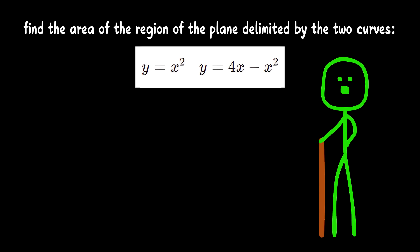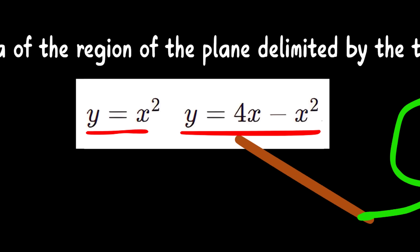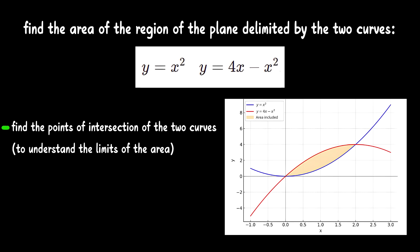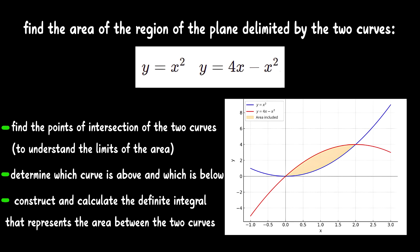Let's take this problem as an example. You're asked to find the area of the region of the plane bounded by these two curves. So, to make this problem more manageable, you can break it down into sub-problems. The first one could be finding the points where the curves intersect to determine the limits of the area. The second is figuring out which curve is on top and which is on the bottom. The third is setting up and calculating the definite integral that gives you the area between the curves.